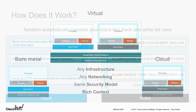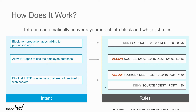What Tetration is really doing is dynamically working out where each endpoint sits inside different groups and what firewall rules to put on that host. These rules are updated continuously in near real-time. As endpoints move from scope to scope or match different filters, the rules are updated and re-pushed down to that sensor.